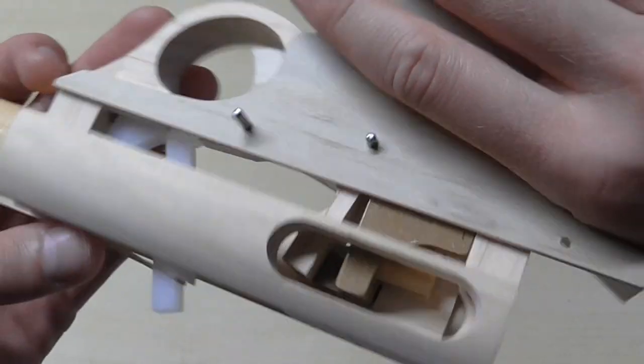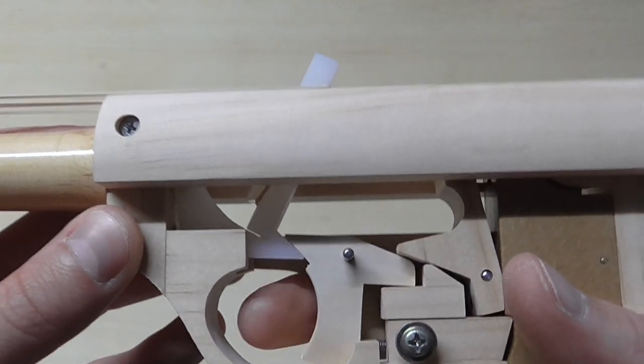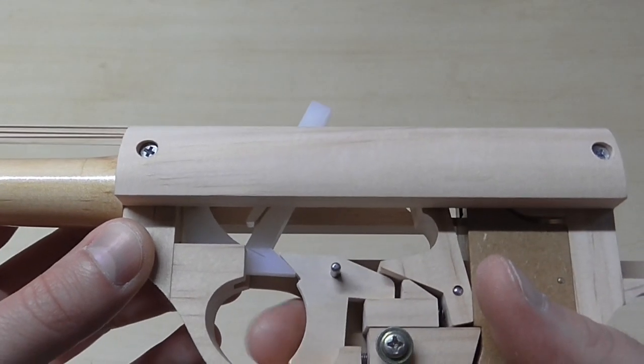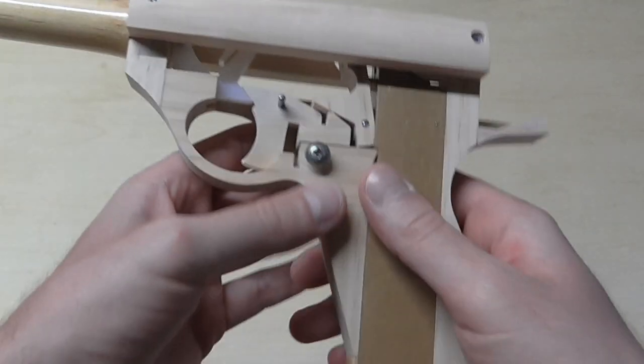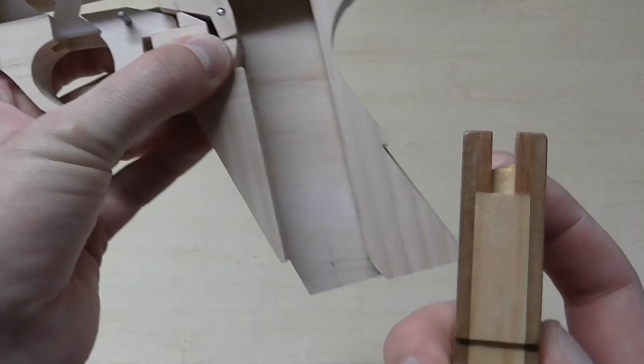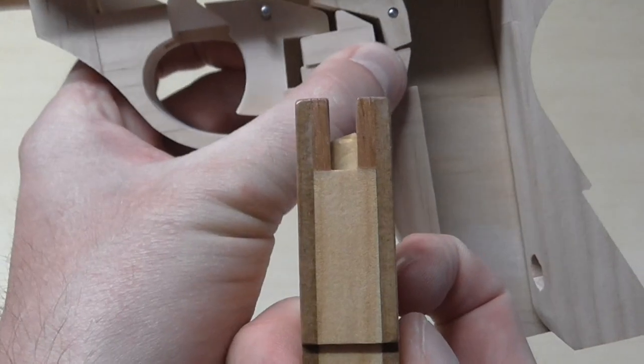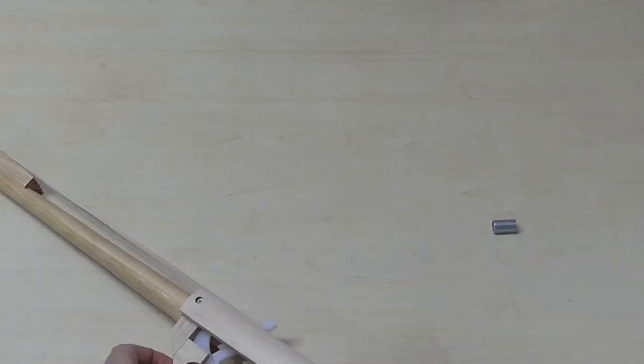Now my magazine is empty. We'll see another feature of this system, which is a last shot hold open. Now that the magazine is empty, the follower actually sticks up and prevents this part from moving. I cannot actually shoot it anymore until I've changed magazines or refilled this one.